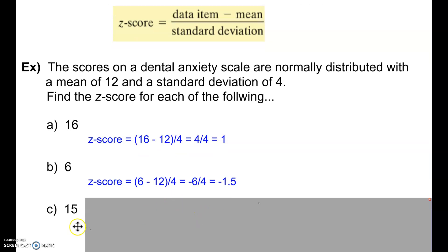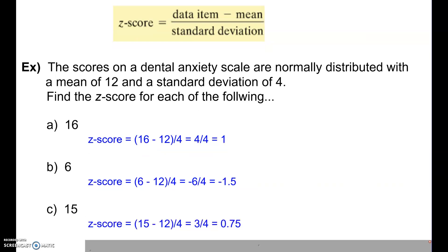What about 15? Same thing. Take 15 minus 12, data item minus the mean, and then divide our result by 4 and get 0.75. So again, well within the majority of the data. Let's take a look at another example.